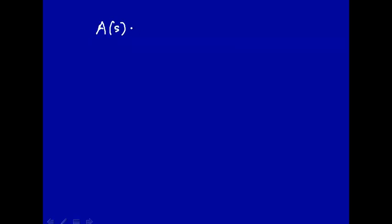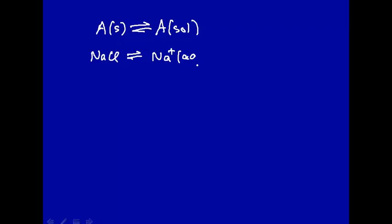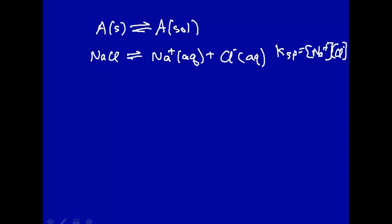For example, we can write, if we have some component A, which is a solid, that will be in equilibrium with A which is now solvated. If you have ions, for example NaCl, that's in equilibrium with Na⁺ and Cl⁻ in aqueous solution. We treat this at the introductory chemistry level: Ksp is the concentration of sodium times the concentration of chloride. And that's the equilibrium constant for this reaction. We'll go into that in a little while.